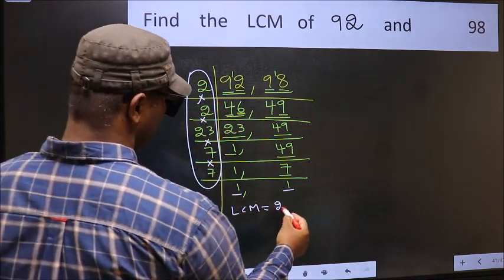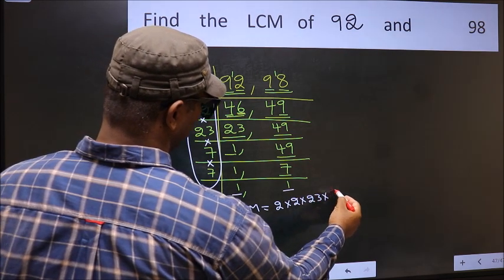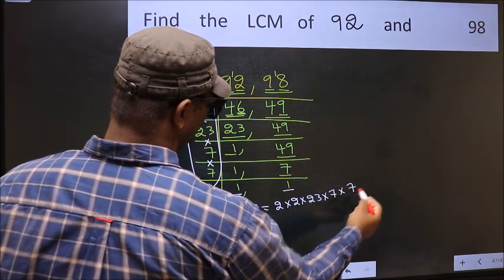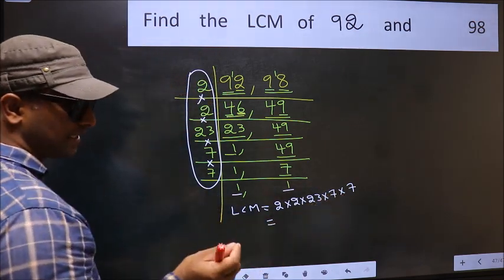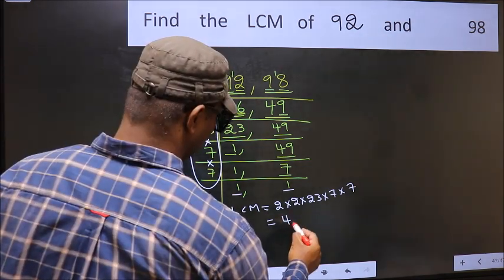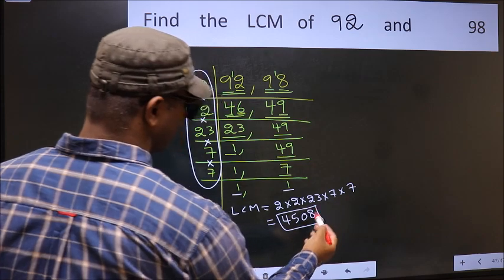That is 2 into 2 into 23 into 7 into 7. When we multiply these numbers, we get 4508 is our LCM.